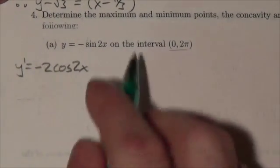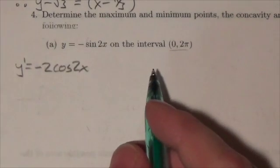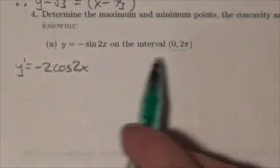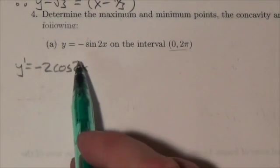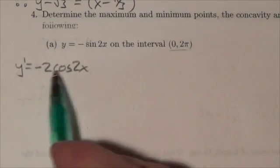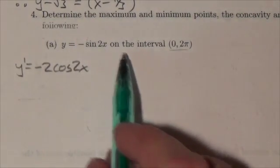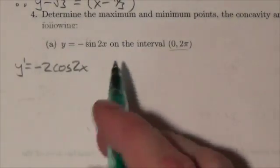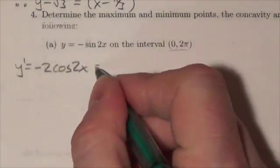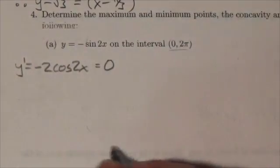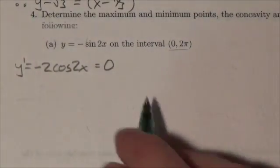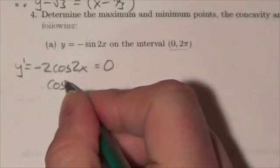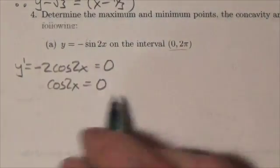Now to figure out where the maximums and minimums are, I'm looking for critical numbers. Sine is defined on the entire domain, and so is cosine — all real numbers. So there's no issue with it being undefined. When I take the derivative, this isn't undefined anywhere. So I'm really just interested in where the critical numbers result from where this is equal to 0. I'll divide by negative 2, and so you're going to get cosine of 2x equals 0.